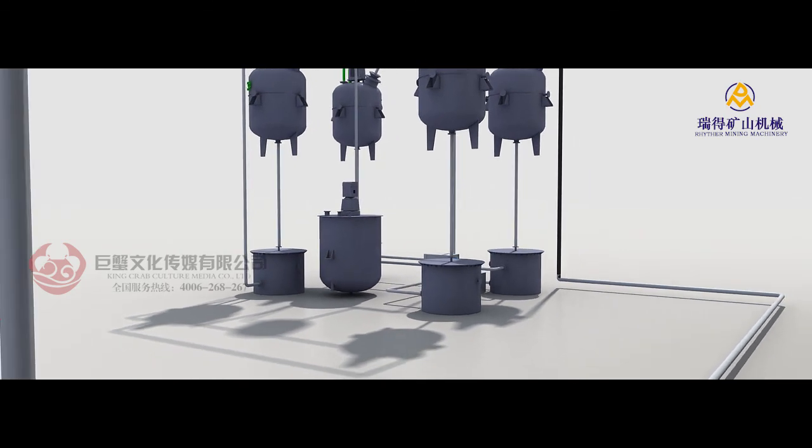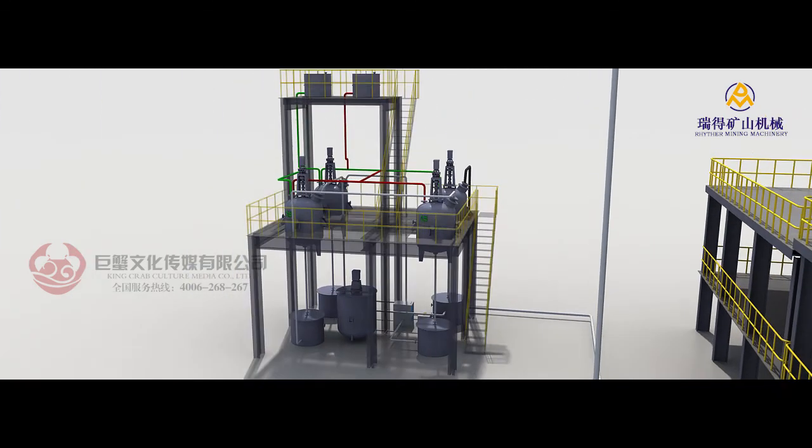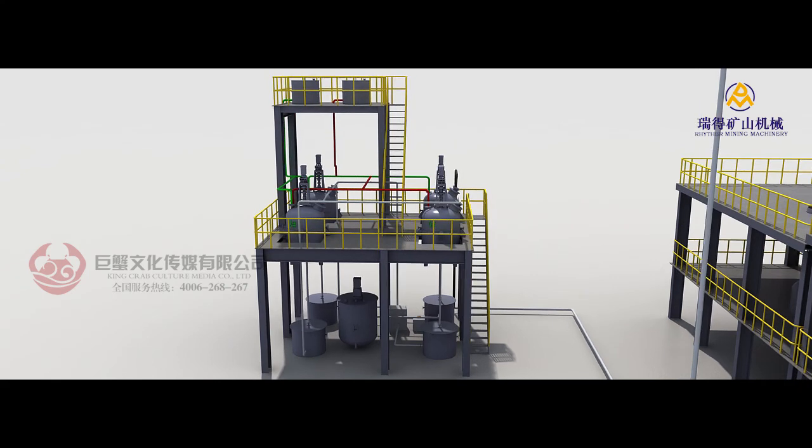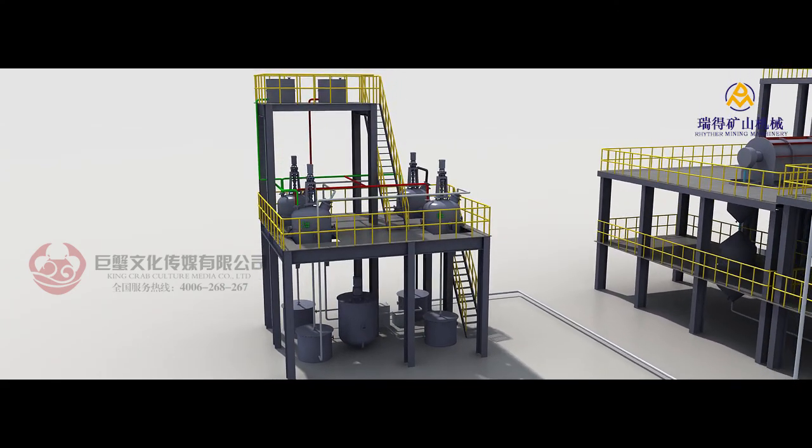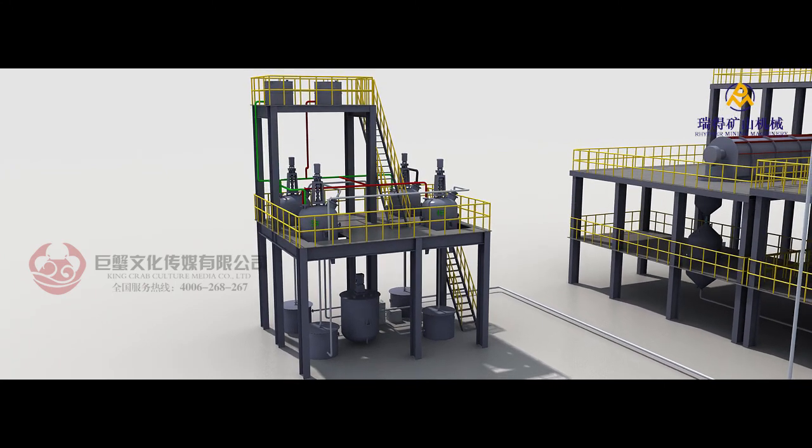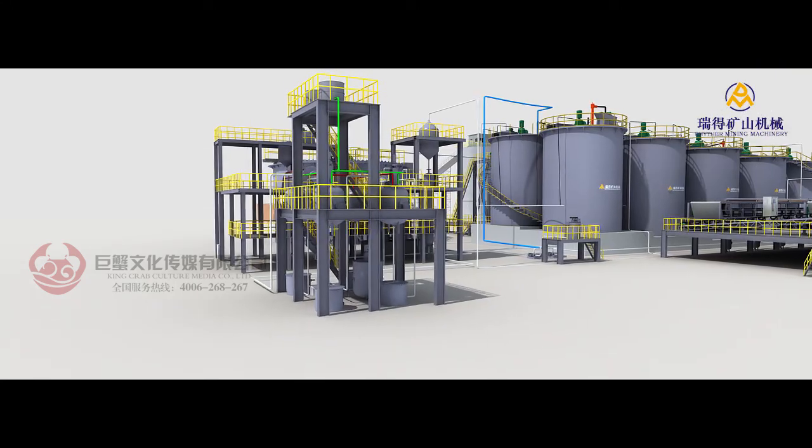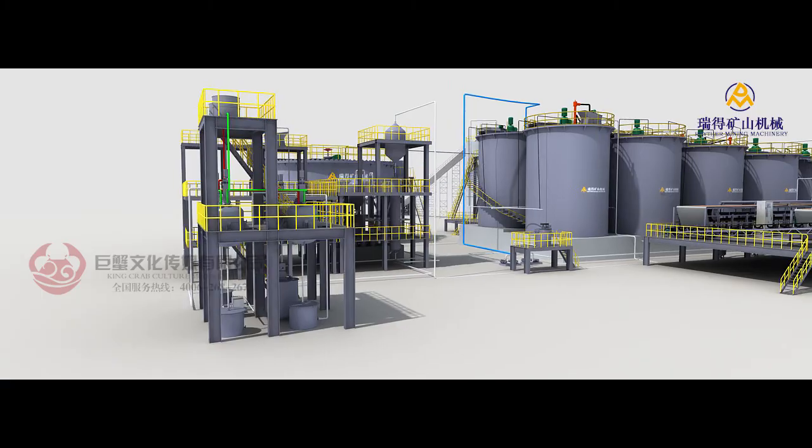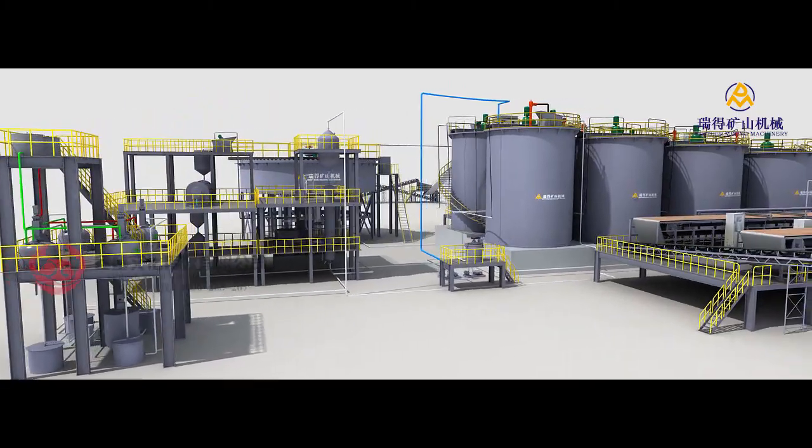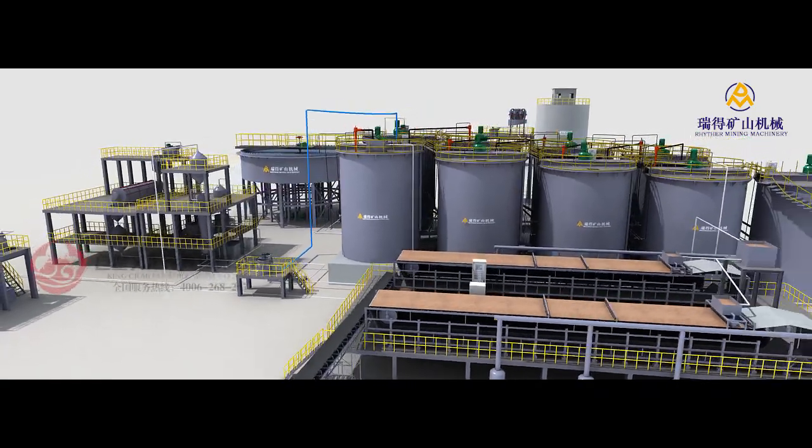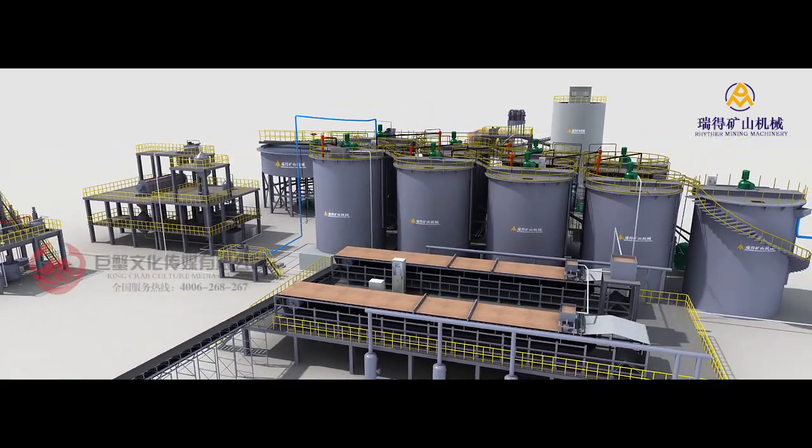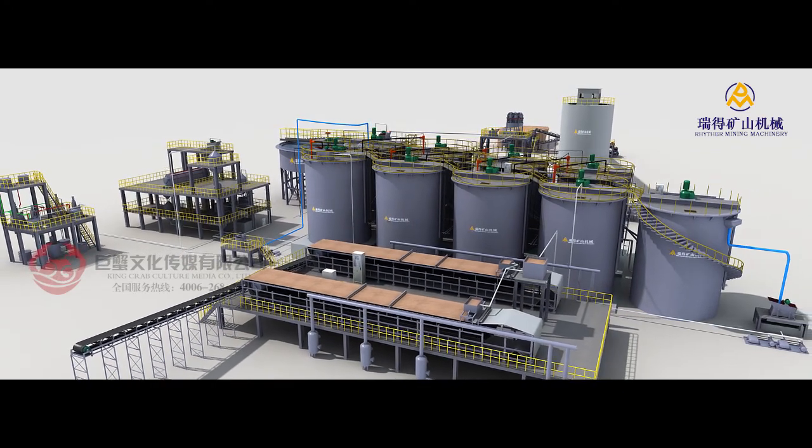Exhaust gas and waste fluid generated through entire smelting process can meet discharge standard after treatment, which can significantly reduce the damage to environment. This process is the mainstream ore concentration process for oxidized ores in today's world, and the whole CIL process boasts of relatively high Au and Ag recovery which can reach over 90%.